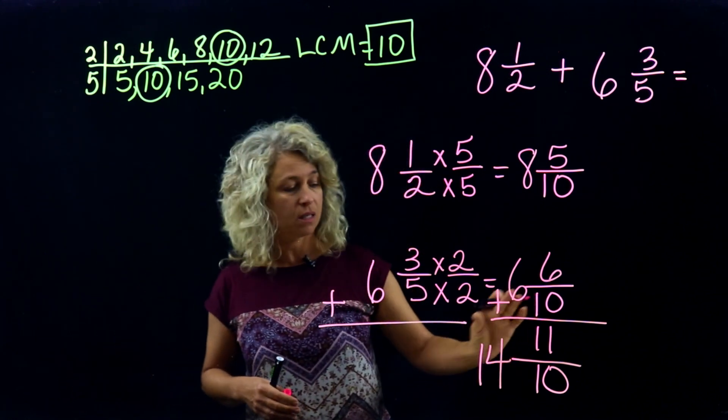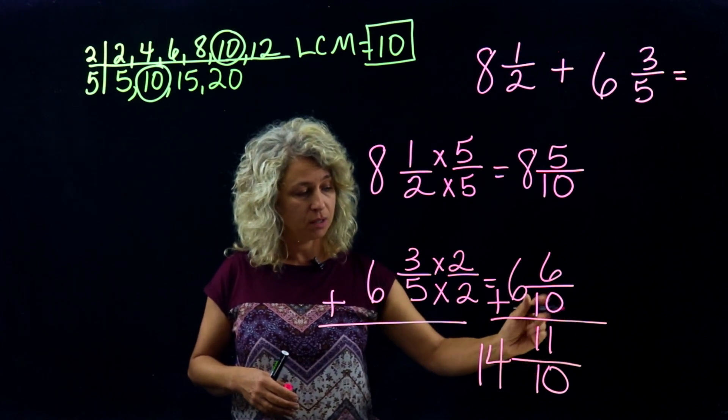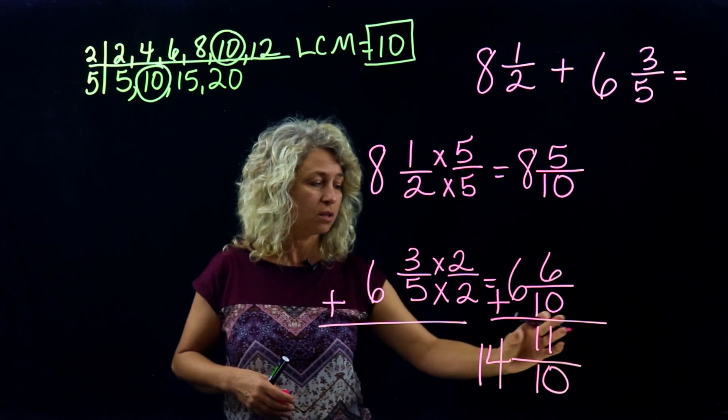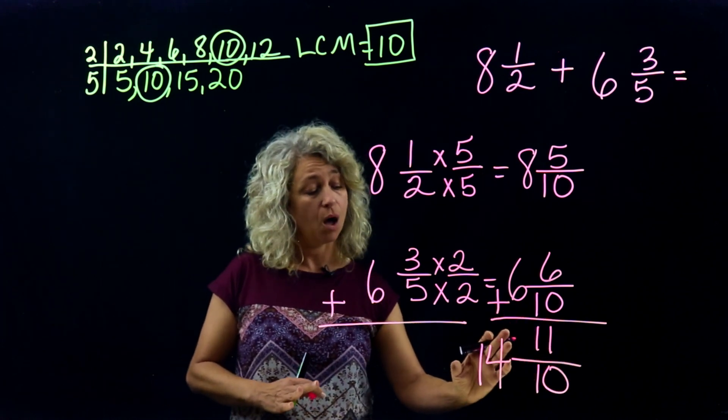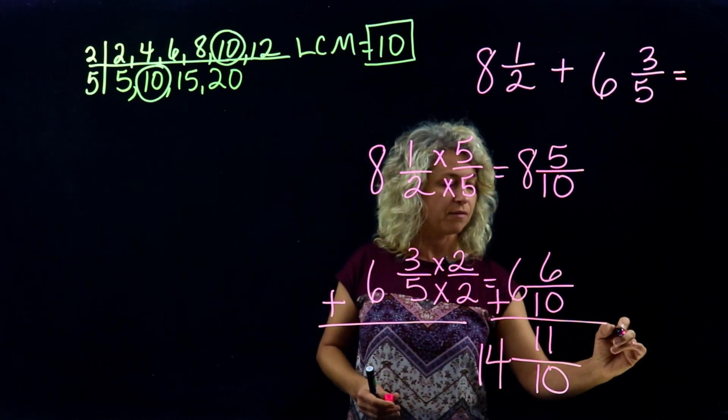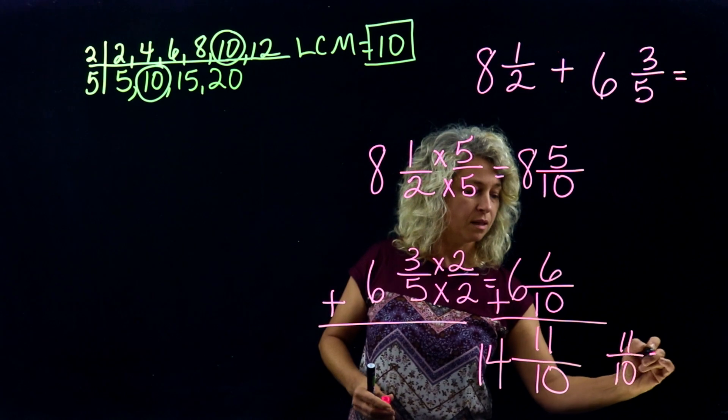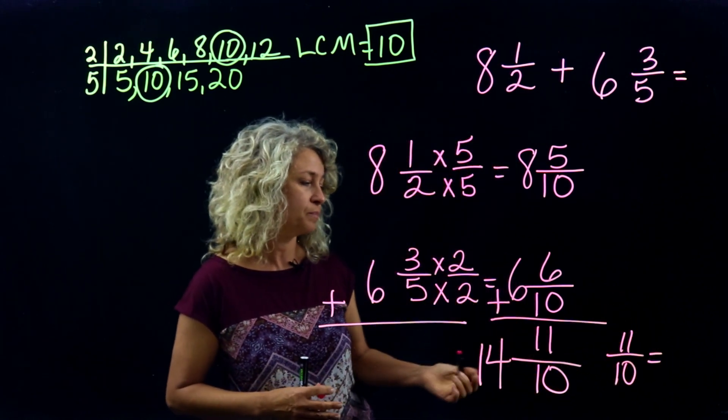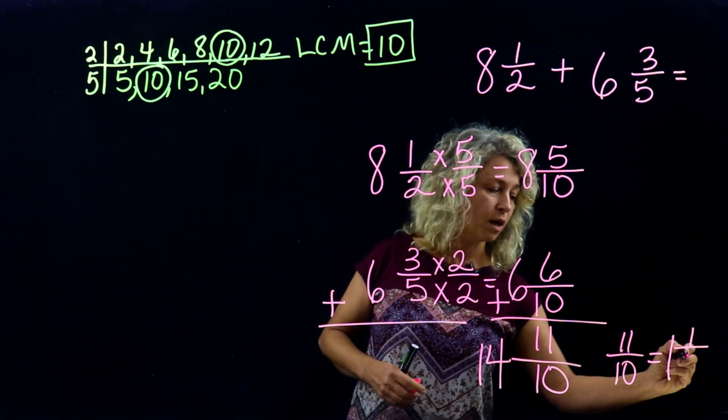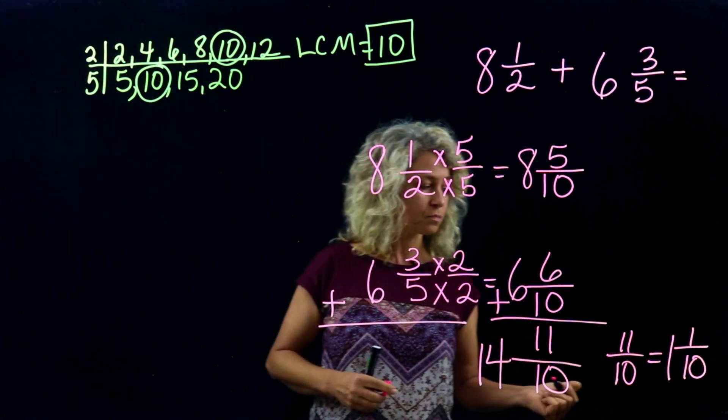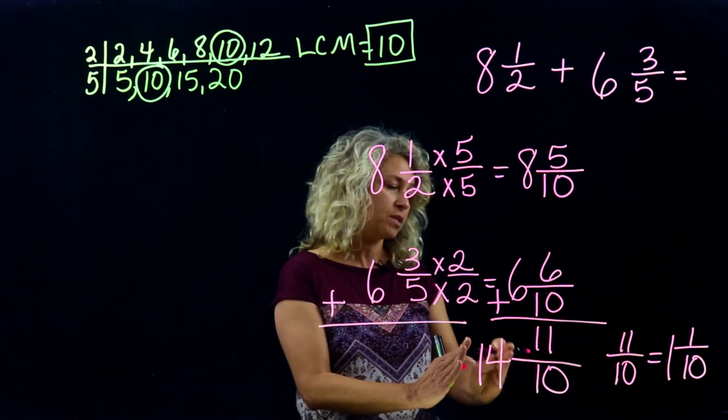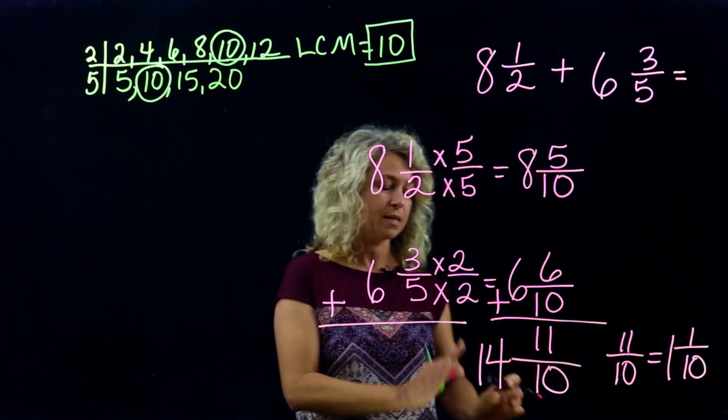Now this is considered an improper fraction, this part here, because the large number's on top, right? So let's look, let's leave this over to the side as far as the whole number, and let's just focus on the fraction itself: 11/10. Let's change this part back to a mixed number. 10 will go into 11 one time. There would be one left over and 10 is the denominator. So if I want to add it to the 14, one, don't forget the one, the whole number one has to be added to the 14 and that becomes 15 and 1/10.